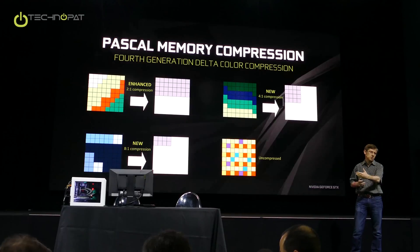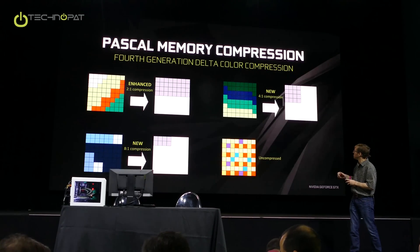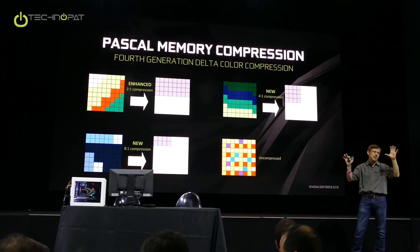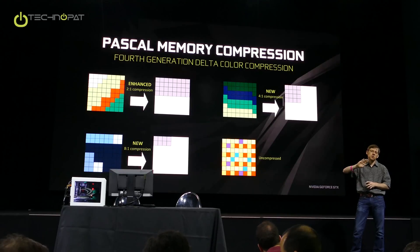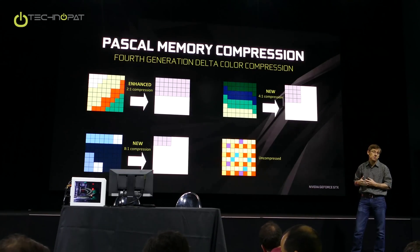We also extended delta color compression beyond two-to-one. We found there are often cases where you can go further. So we have a new mode: a four-to-one delta color compression mode. Imagine the skybox in a game — the sky has very shallow gradients that are changing slowly. In that case, you can actually go beyond two-to-one and get to four-to-one, which saves even more bandwidth.